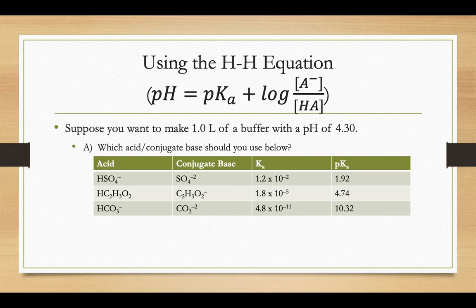Let's say you wanted to make one liter of a buffer solution, and you wanted the pH of that buffer to be somewhere around 4.3. And I gave you a set of chemicals that you could choose from. You could do HSO4 minus and its conjugate base, the sulfate ion. You could do acetic acid with the acetate ion, or you could do the bicarbonate ion and the carbonate ion buffer. And if I gave you the choice, which combination would you want to use?